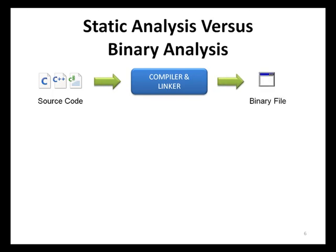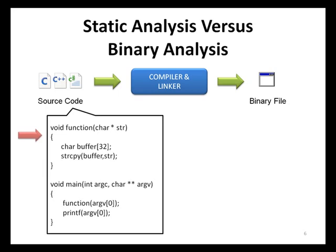Static source code analysis examines the actual source code written by developers for exploitable coding patterns. Any potentially vulnerable code detected is flagged and reported to the user of the tool. Binary analysis tools also read the source implementation of an application. However, binary analysis tools read the source implementation in a different form — specifically, the binary or machine code form of an application — and then analyze it for vulnerable coding patterns.